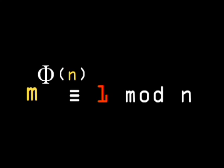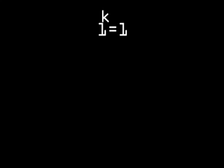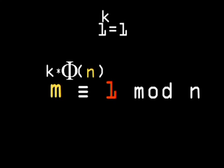Now, we just need to modify this equation using two simple rules. First, if you raise the number 1 to any exponent k, you always get 1. In the same way, we can multiply the exponent phi n by any number k, and the solution is still 1.